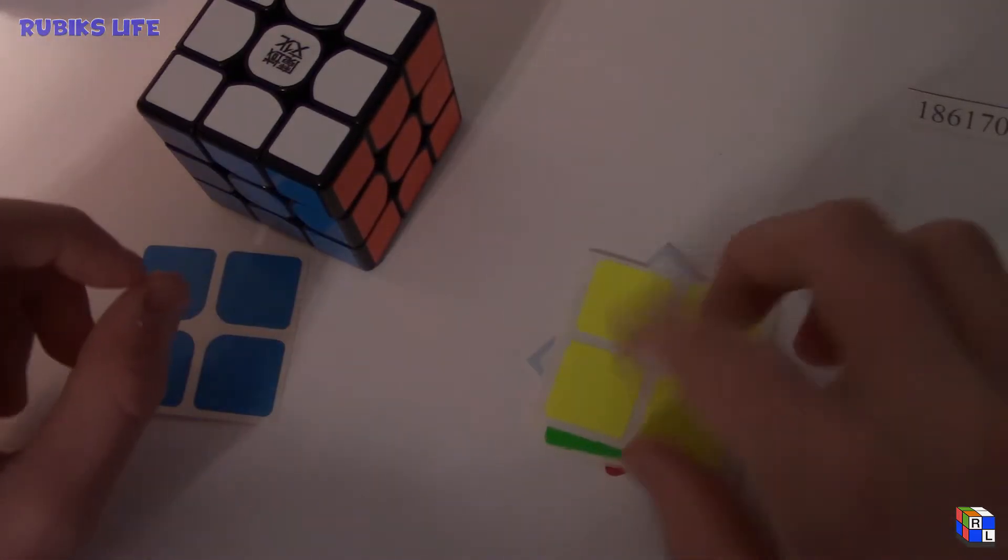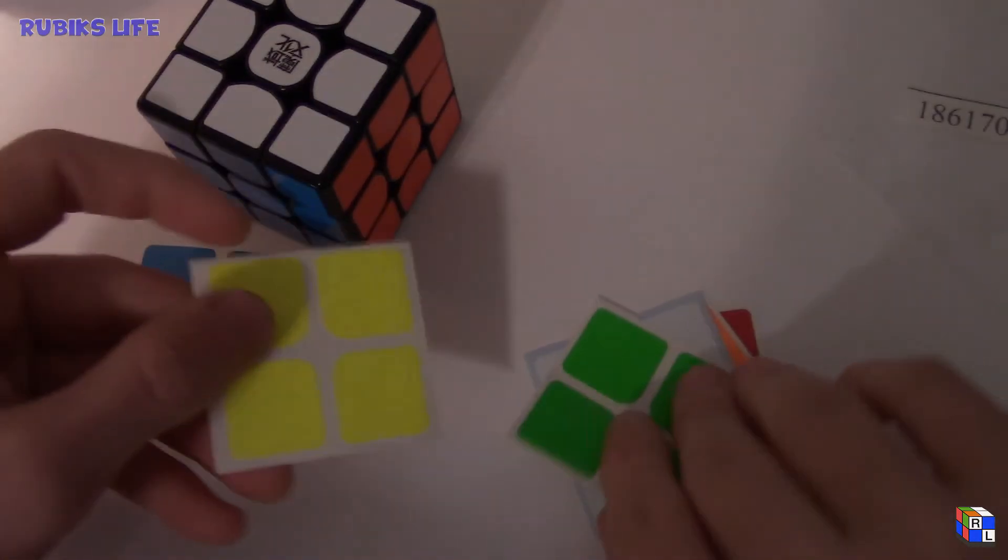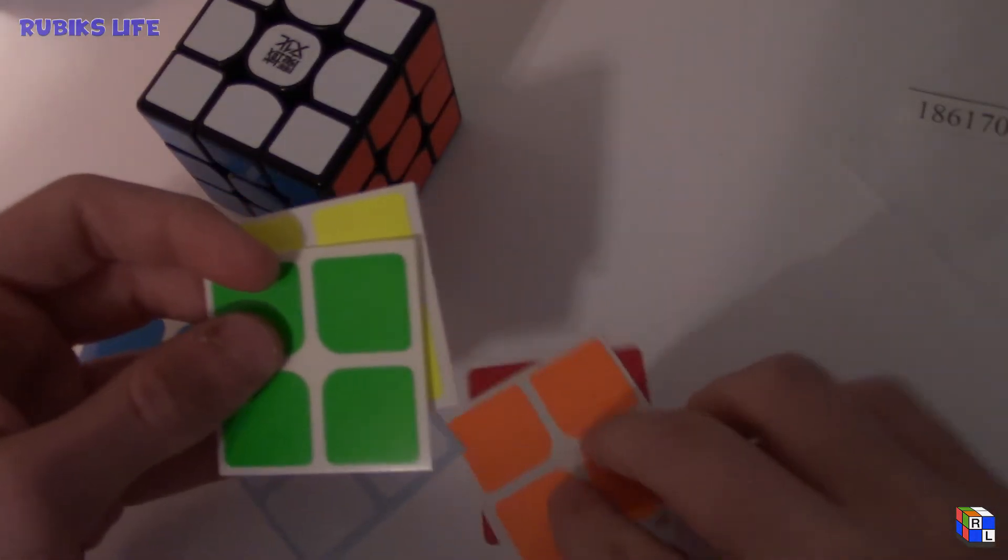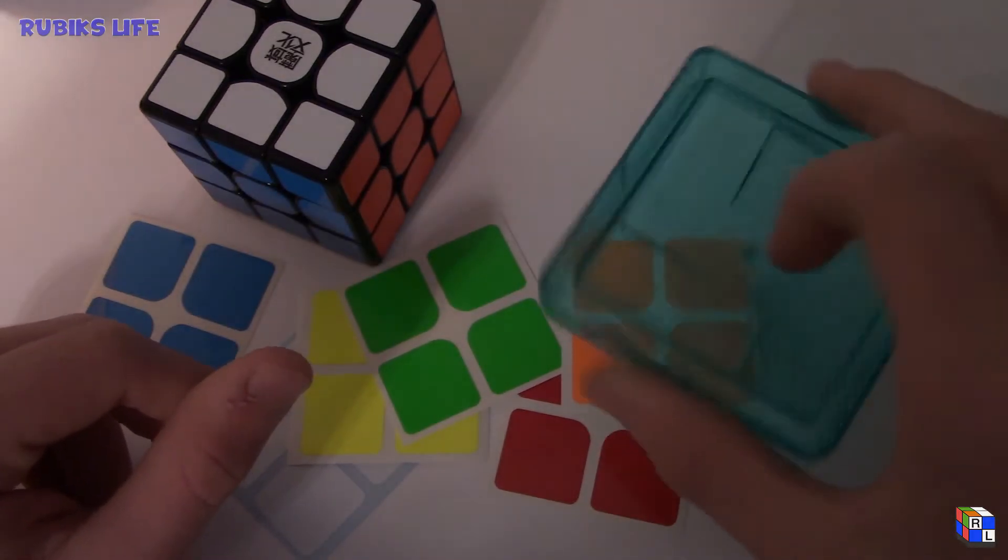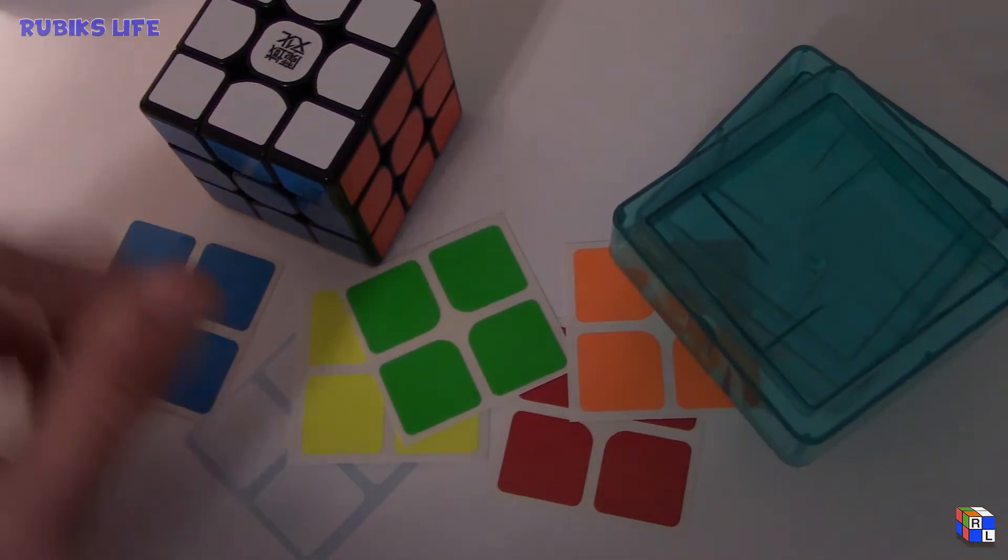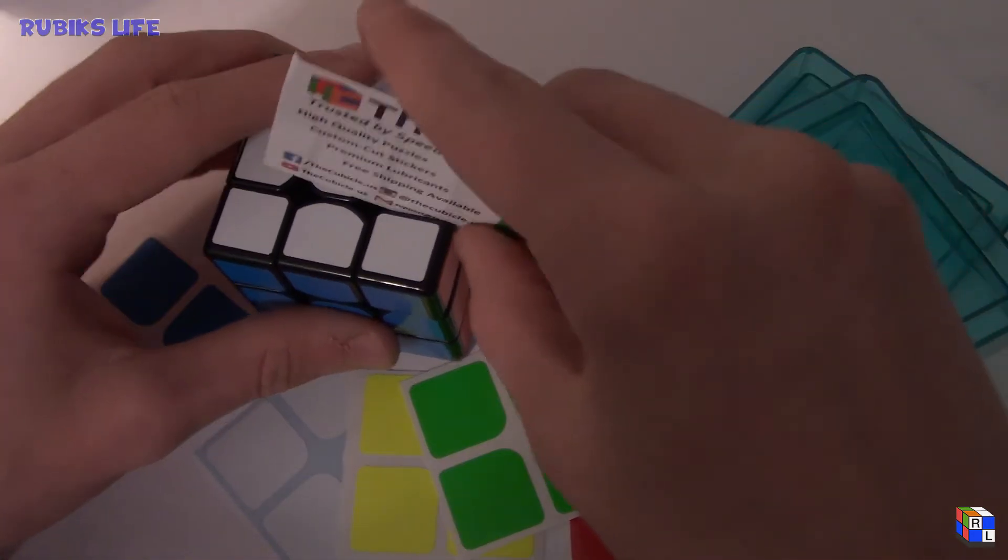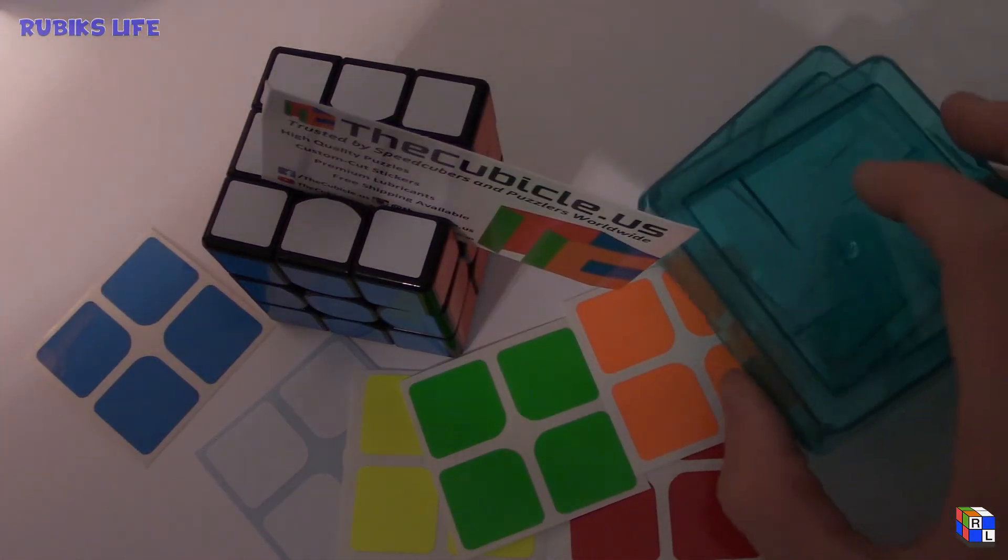I've got light blue, fluoro yellow, fluoro green, white, fluoro orange, and regular red, and then I've got these things that came with it and the Cubicle business card.